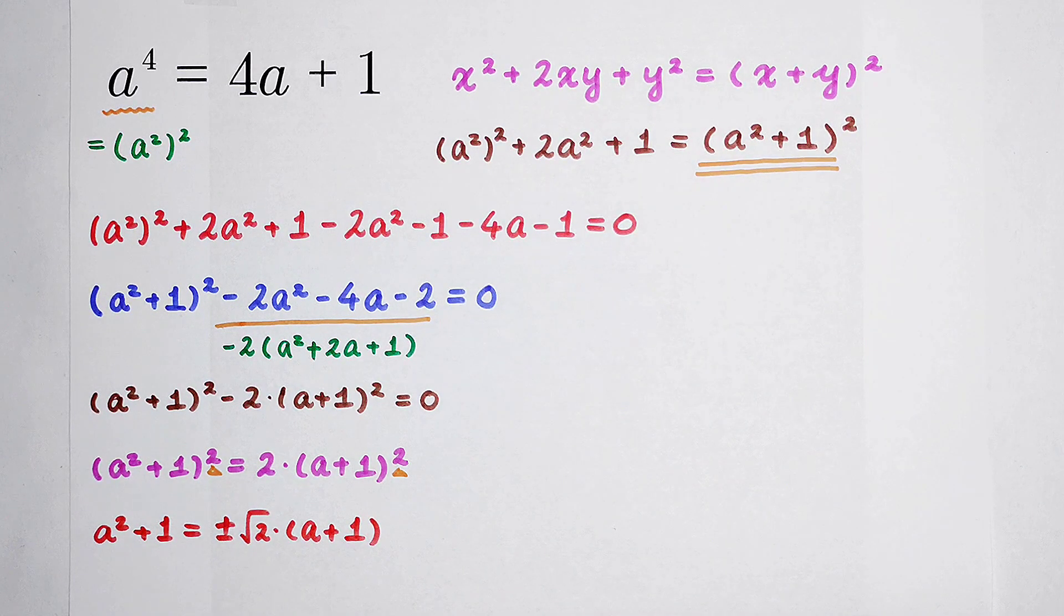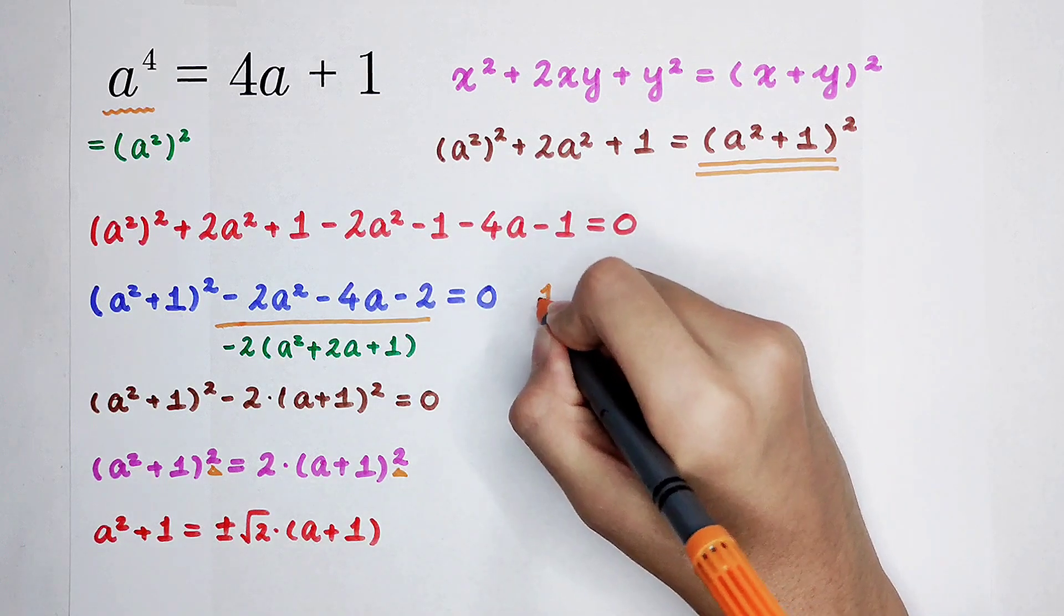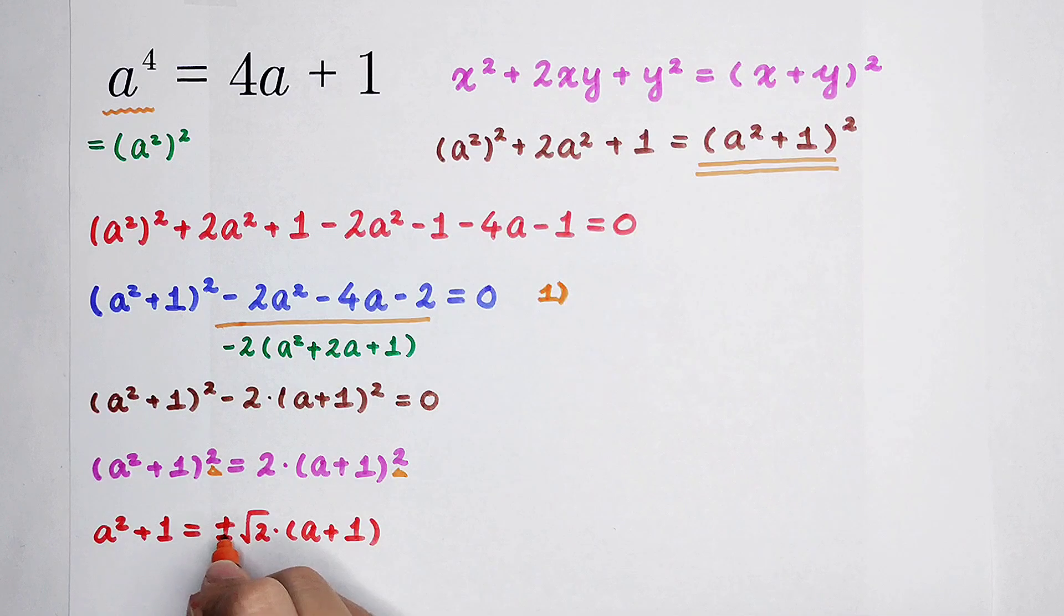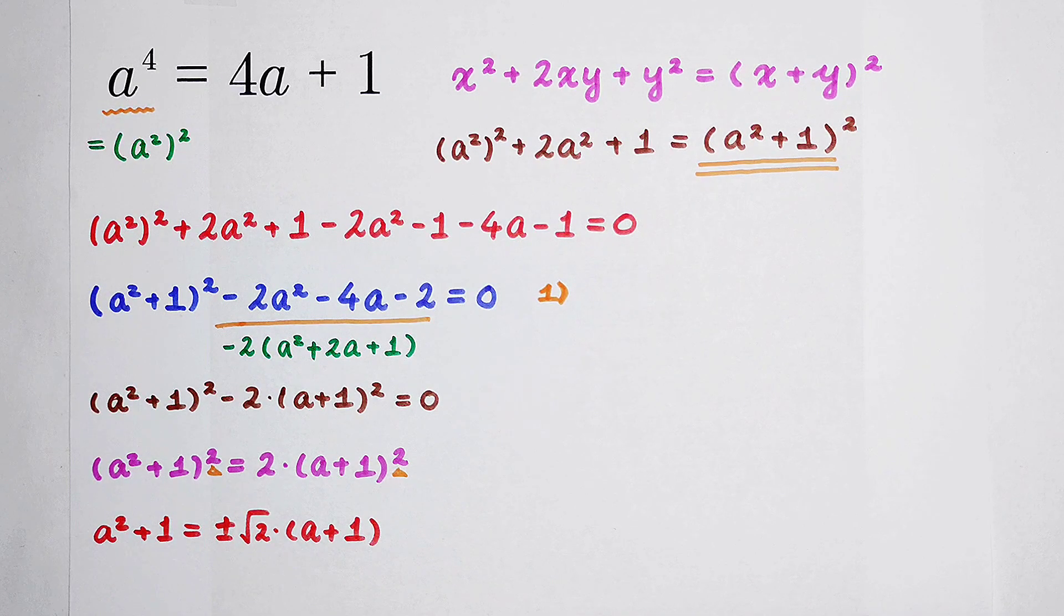How many cases are there? Because a positive sign and a negative sign, there are only two cases. Only two cases. They are very easy to discuss, but they are very difficult to solve.